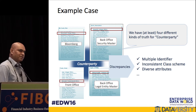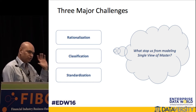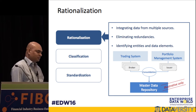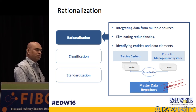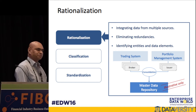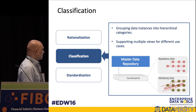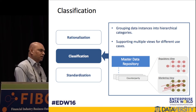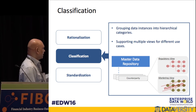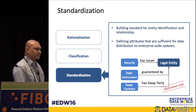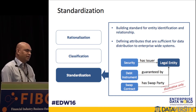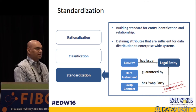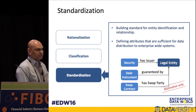We put all these problems into three categories: rationalization, classification, and standardization. Rationalization is bringing data from multiple systems — like trading and portfolio systems — removing redundancies and keeping them in the MDM repository. Classification is making sure the MDM system can accommodate multiple perspectives and viewpoints, for example a regulatory view versus a marketing view. Standardization means a particular legal entity may play multiple roles, deal with multiple securities and transactions — all of which must be standardized, otherwise downstream systems may use the same data inconsistently.